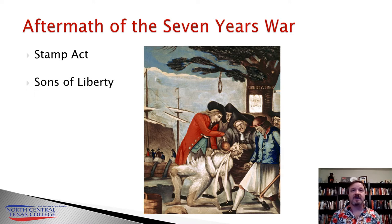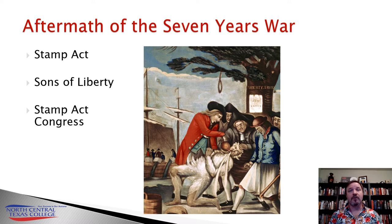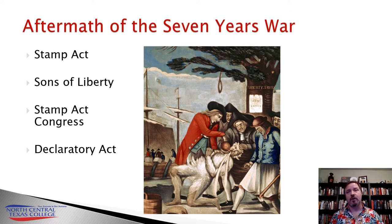Colonies began to assemble to condemn the act, forming organizations like the Sons of Liberty, which encouraged physical violence against stamp offices and tax collectors. They even formed a collective Stamp Act Congress, urging merchants to refuse British imports — a boycott. Colonists refused to pay the stamp tax. In 1766, the British Parliament did repeal the Stamp Act, mostly on behalf of British merchants losing money due to the boycott. At the same time, Parliament passed the Declaratory Act, asserting their right to tax the colonies. When they followed up with additional taxes later, it led to more resentment.